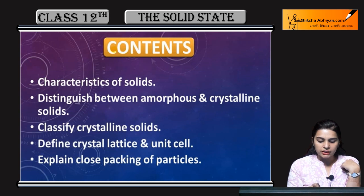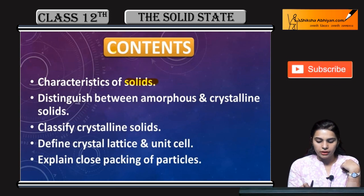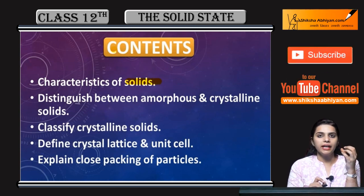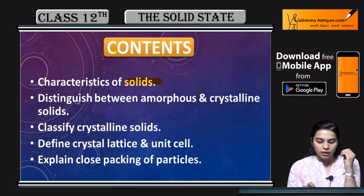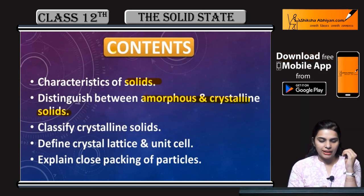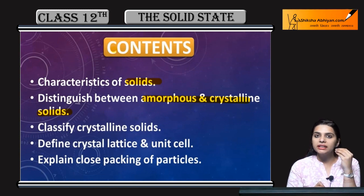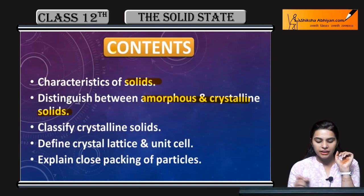First is the characteristics of solids — what are the characteristics of solids, and why do we call them solids? Next, we will distinguish between amorphous and crystalline solids. How many types of solids are there, and what is the difference between them? We will study all of this.